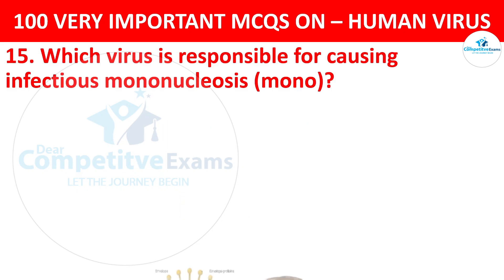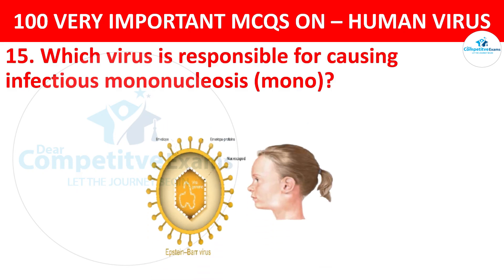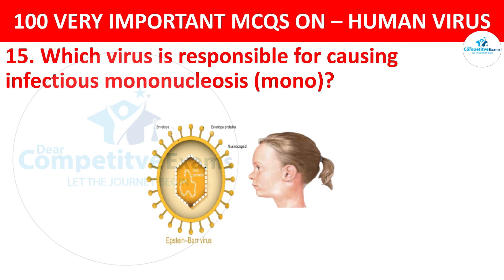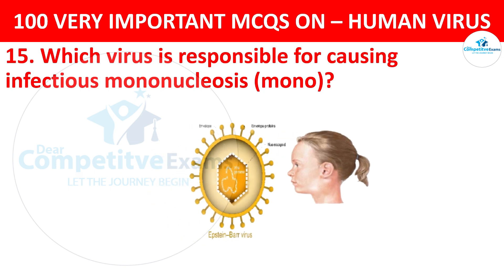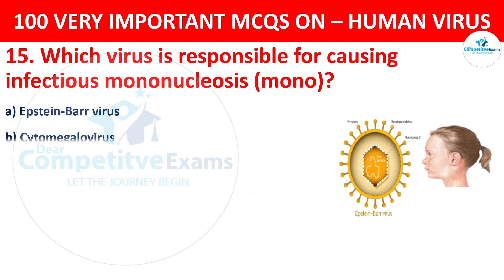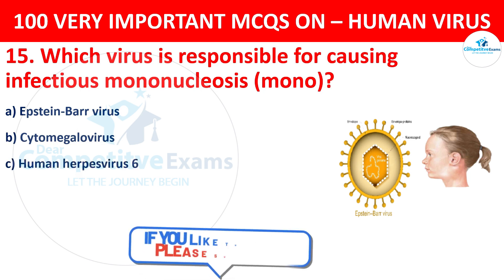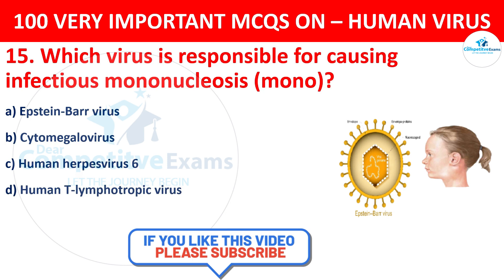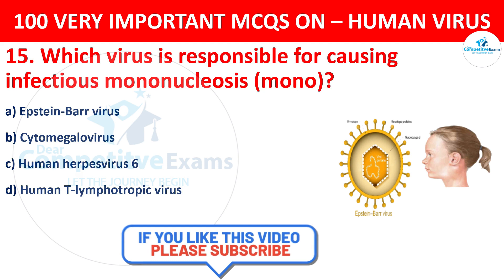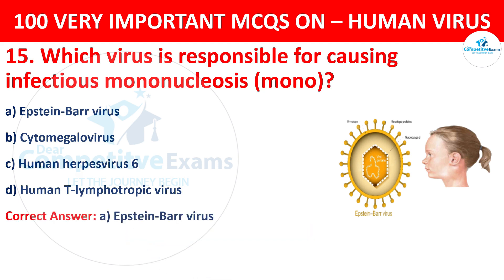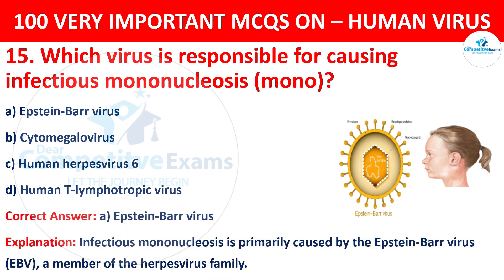Question 15. Which virus is responsible for causing infectious mononucleosis (mono)? Your options are Epstein-Barr virus, Cytomegalovirus, Human herpesvirus 6, or Human T-lymphotropic virus. The correct answer is A, that is Epstein-Barr virus. Infectious mononucleosis is primarily caused by the Epstein-Barr virus (EBV), a member of the herpesvirus family.